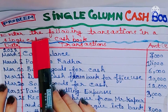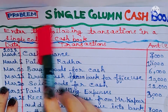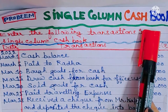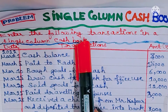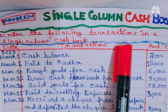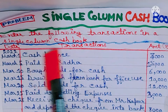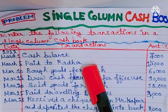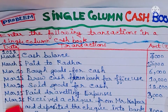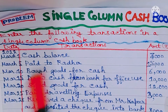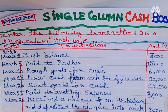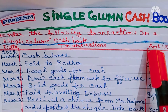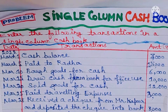Here is the problem: Single column cash book. Enter the following transactions in a single column cash book. Here is the column of date, here is the column of transactions, and here is the column of amount.